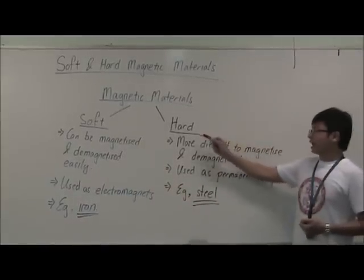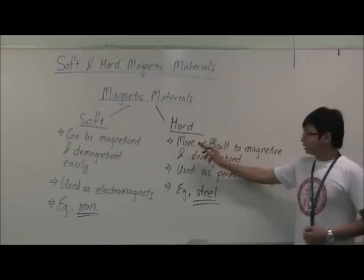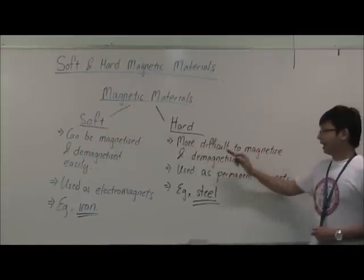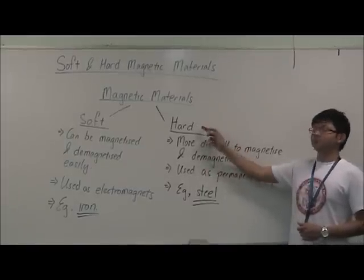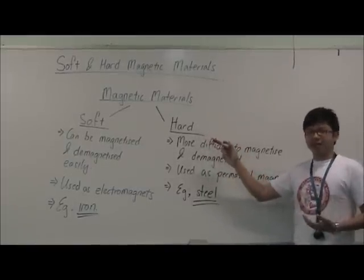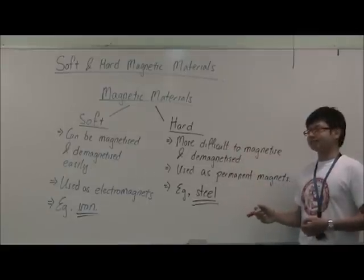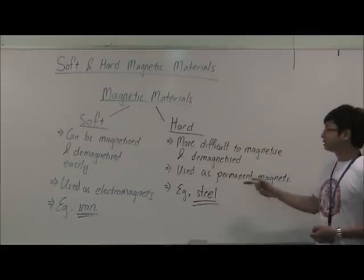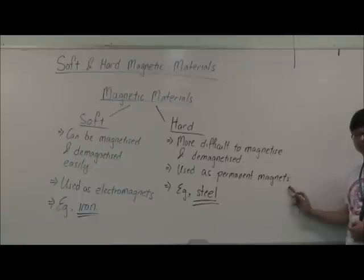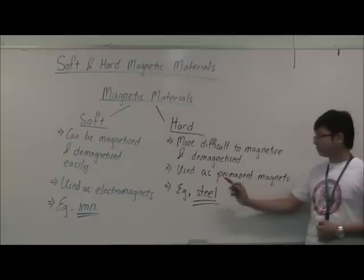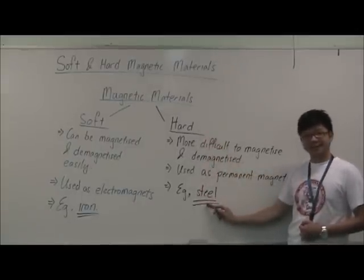Now let's look at hard magnetic materials. It's more difficult to magnetize and demagnetize. Once a hard magnetic material becomes a magnet, it's very difficult for it to lose its magnetism. That's why it's used as a permanent magnet. An example of a hard magnetic material will be steel.